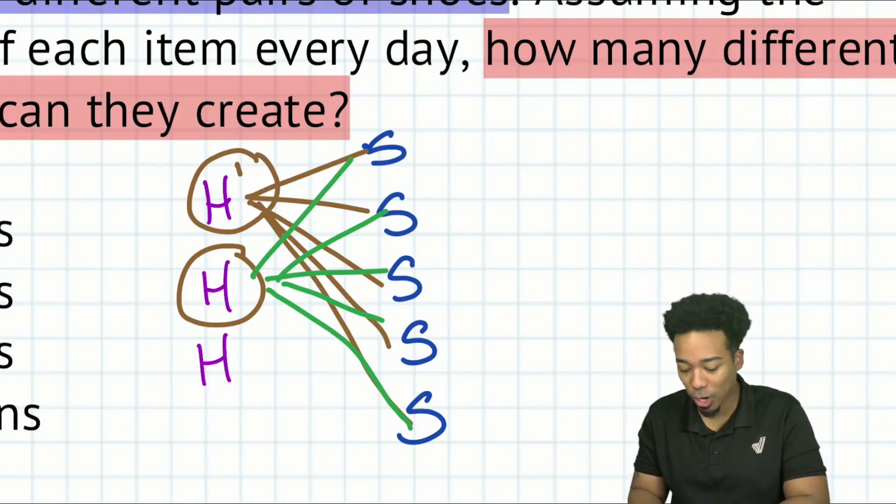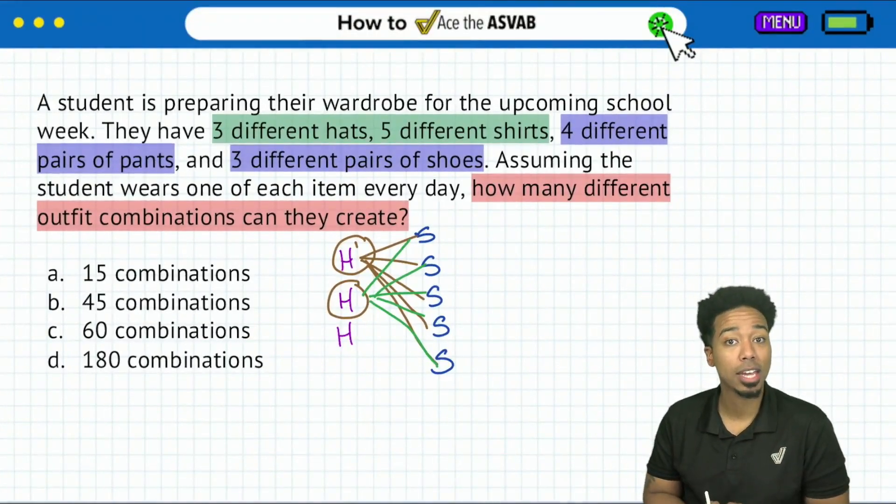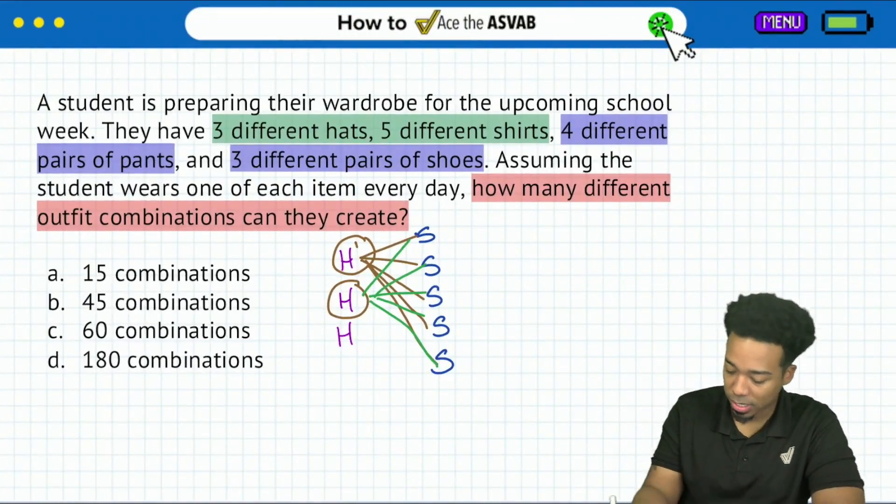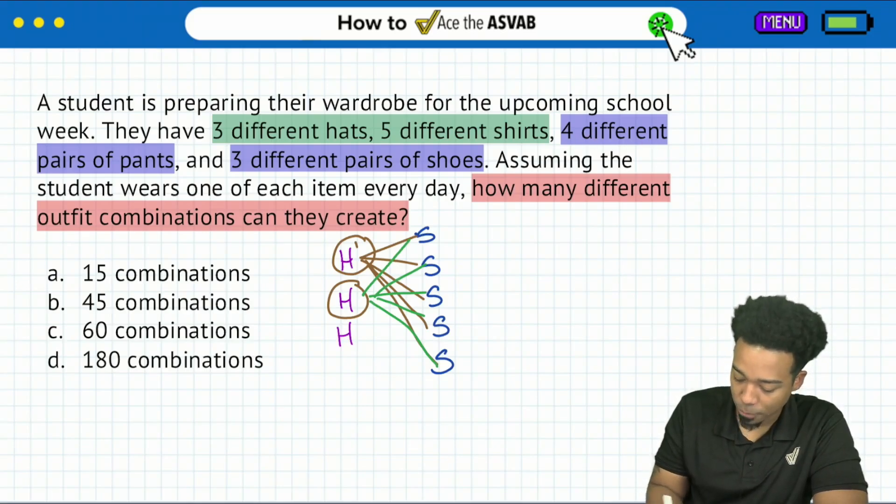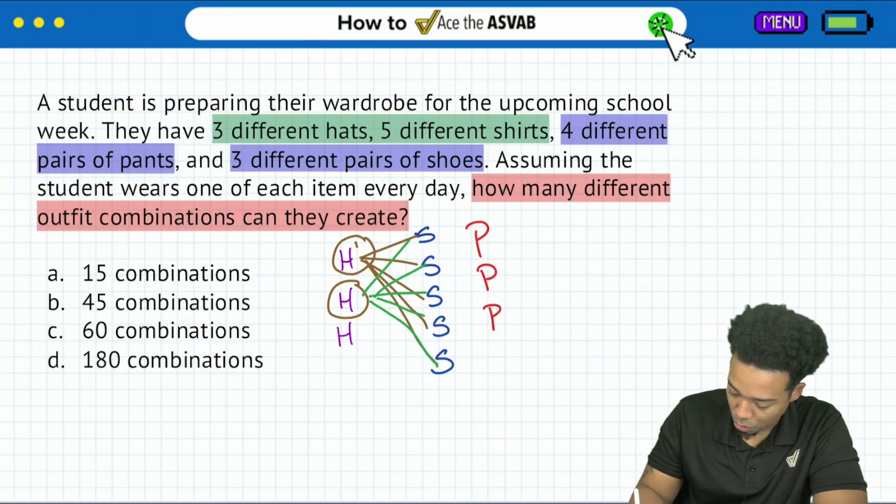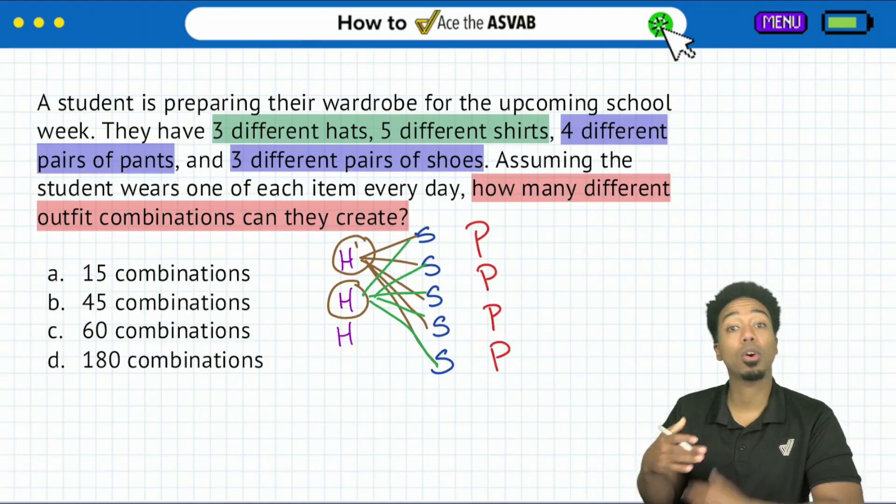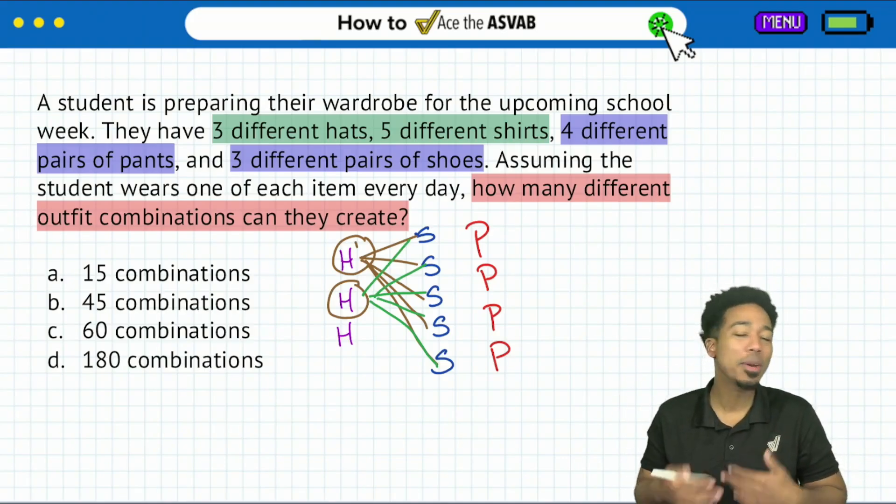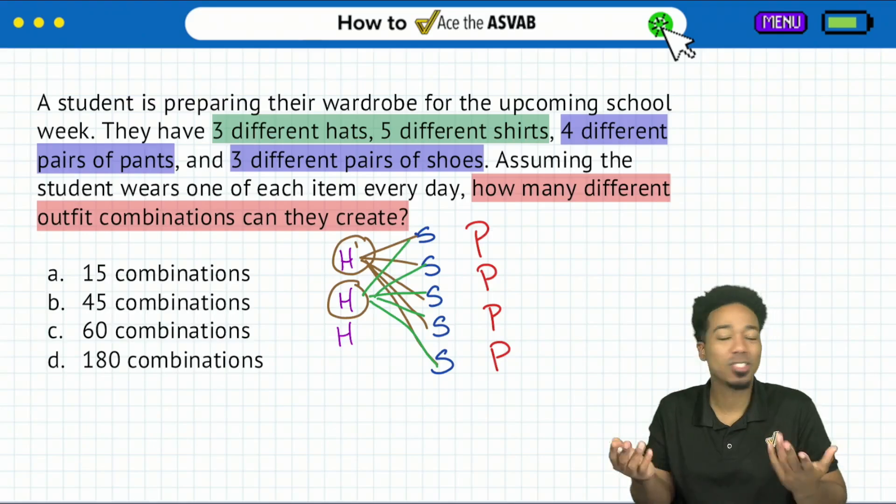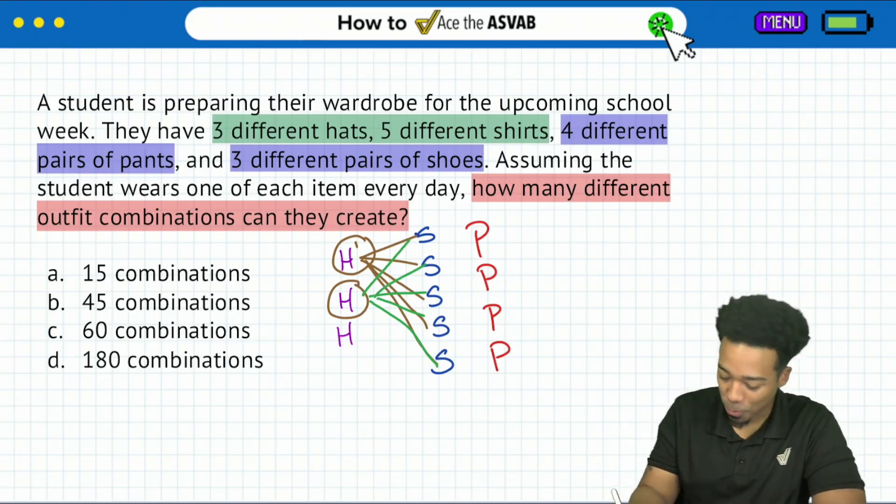And so when we try to scale it up to more than just two possible items or two types of items, when we take a look at the four different pairs of pants, let's go ahead and say we put pant one, two, three and four here. Well, that would only increase the number of ways things are going. But again, to simplify it, it's just multiplication. So with that,